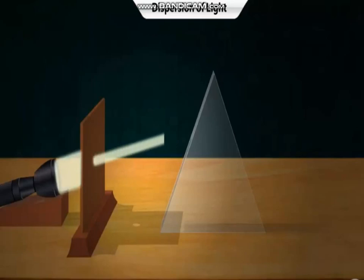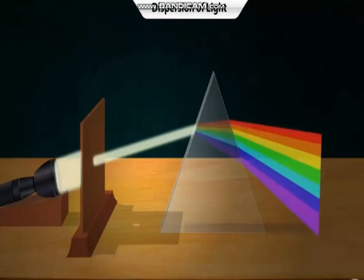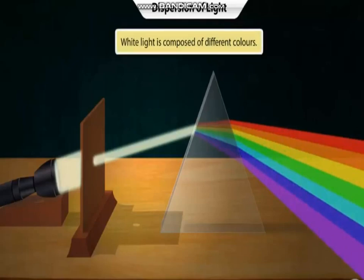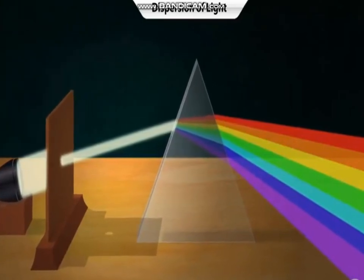Amazing, isn't it? Newton was the first one to realize that a white ray of light, such as sunlight, is composed of different colors. When white light enters the prism, it gets refracted, producing seven different rays of colors. The angle of refraction is different for each color.